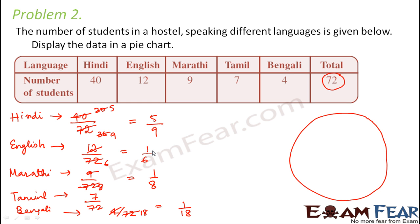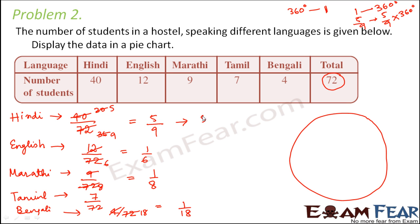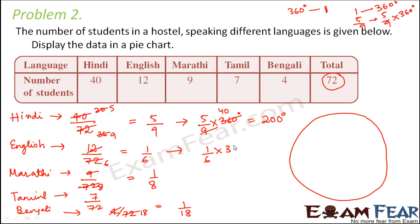Now we will find the respective angles to draw the sectors of the pie chart. The entire circle corresponds to 360 degrees. So if 1 corresponds to 360°, then 5/9 corresponds to 5/9 × 360° = 200°. For English: 1/6 × 360° = 60°. For Marathi: 1/8 × 360° = 45°.